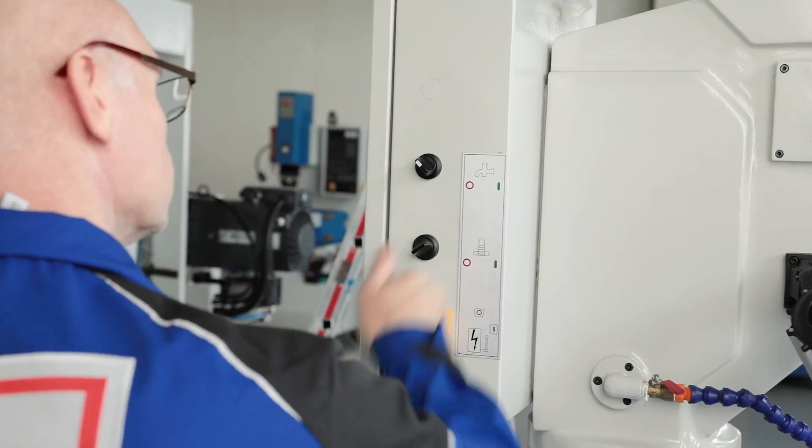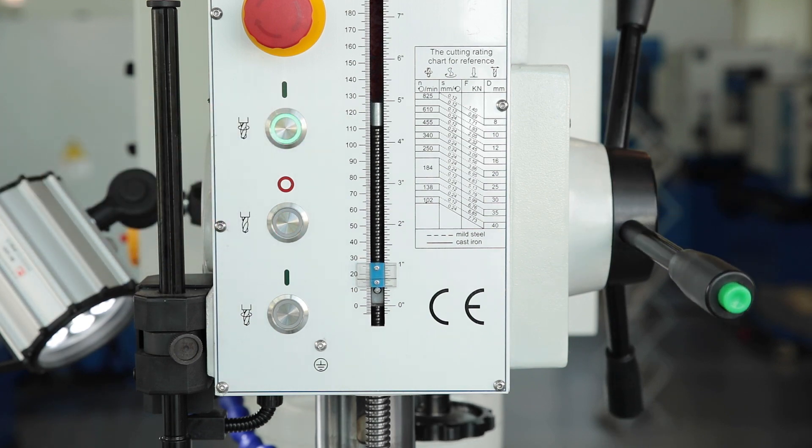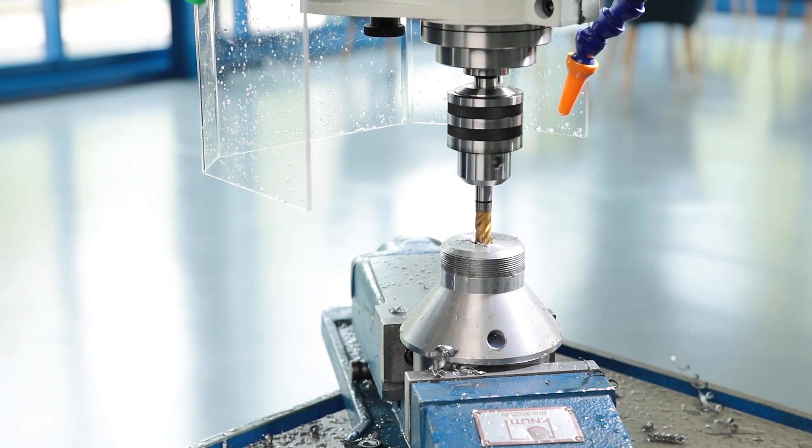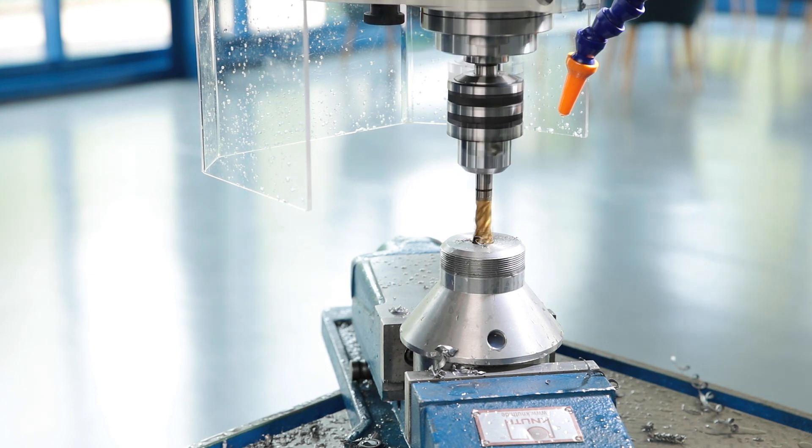If the operator has selected the thread cutting function, the desired thread depth is also defined via this stop. The machine then automatically changes the direction of spindle rotation when the specified position is reached.